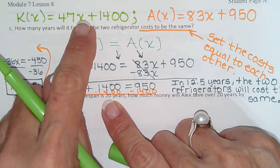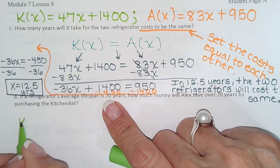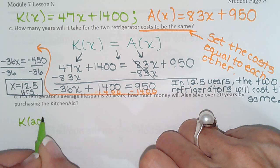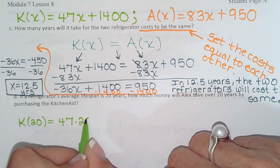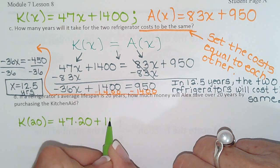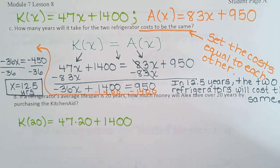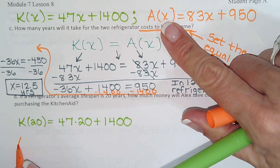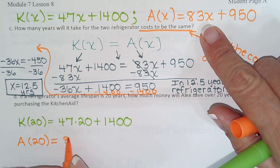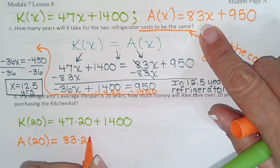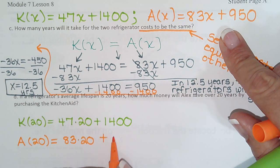So X is number of years. Remember, we said that on the other page. They told us use X for number of years. So in place of X, put 20 in. So the KitchenAid after 20 years will cost $47 times 20 years plus $1,400. And let's go ahead and do the other one. The Amana after 20 years will cost $83 times 20 plus $950.